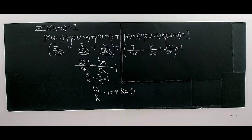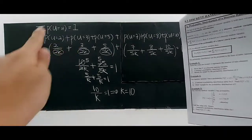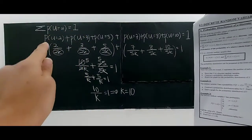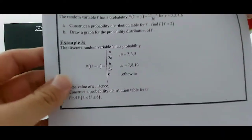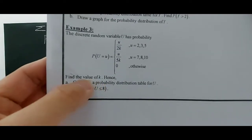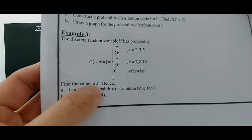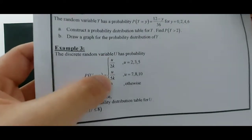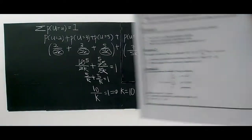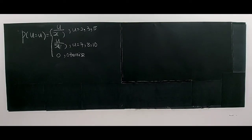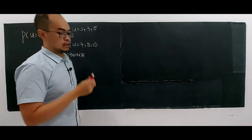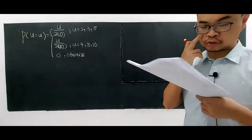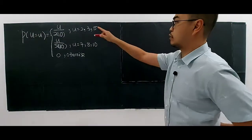Now that we know k = 10, replace k with 10 in the function. The question then asks you to construct a probability distribution table using this value of k.